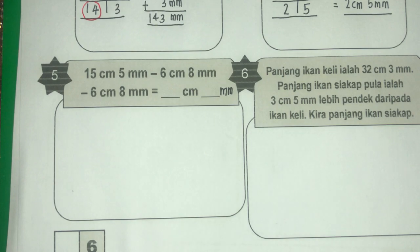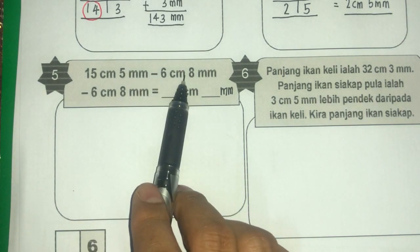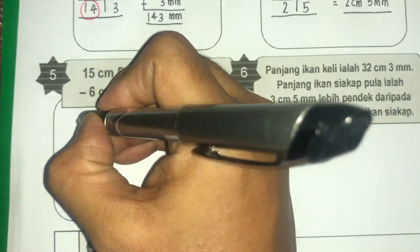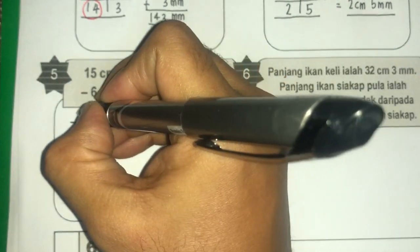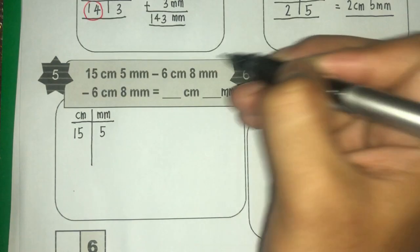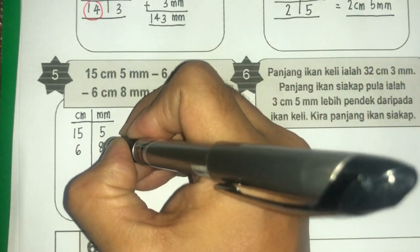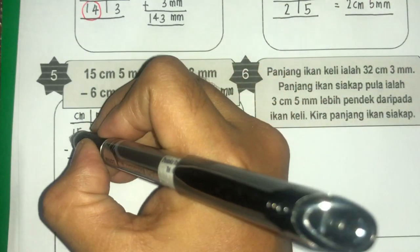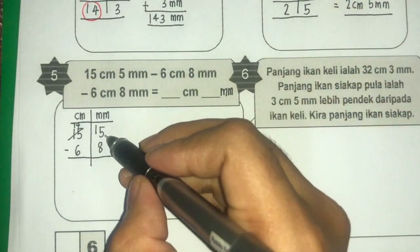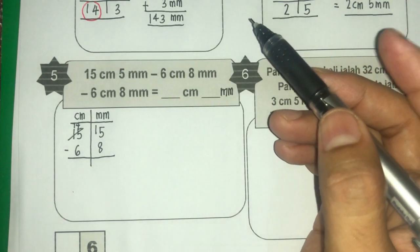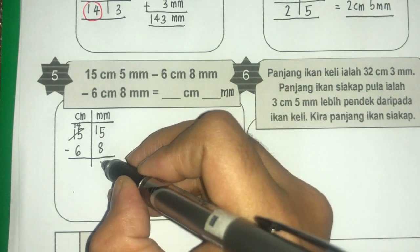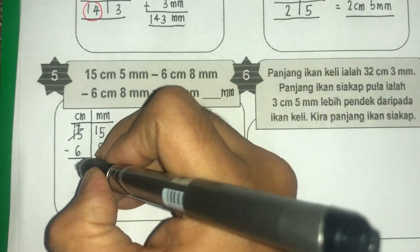Mula-mula kita selesaikan 2 nombor dulu. Lepas kita dapat jawapan, baru kita tolak dengan nombor ukuran yang ketiga. Kita selesaikan satu persatu — cm dan mm. Kita pinjam, dapat 14. Terus jadi 15 sebab 10 mm tambah 5 mm. 10 tambah 5 dapat 15 (shortcut). Jadi 15 tolak 8 ialah 7. 14 tolak 6 ialah 8. Yang ni baru siap peringkat pertama.